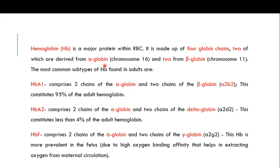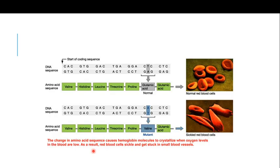Hemoglobin is a major protein within the RBCs and there are three types: HBA1, which comprises about 95% of all hemoglobin; HBA2, which comprises less than 4%; and HBF, which refers to fetal hemoglobin, present only in the fetus. The change in shape of the red blood cell into the crescent form is due to a mutation where glutamic acid in the normal hemoglobin is replaced by valine.